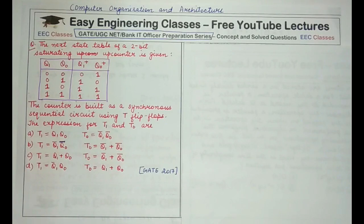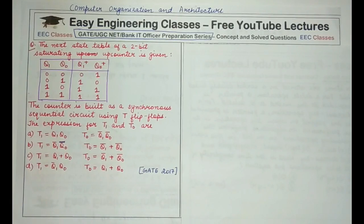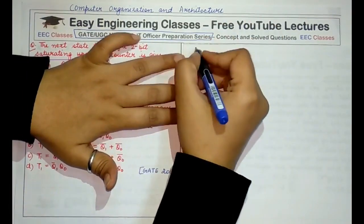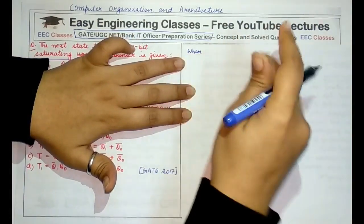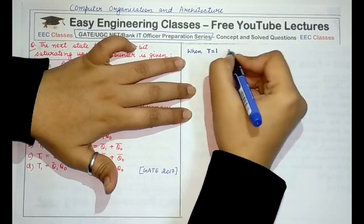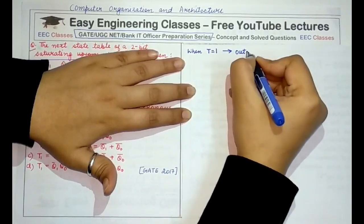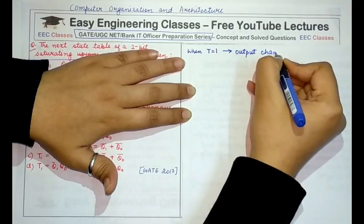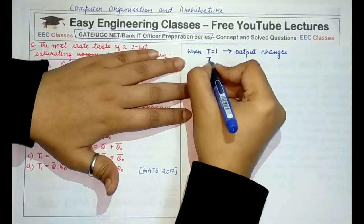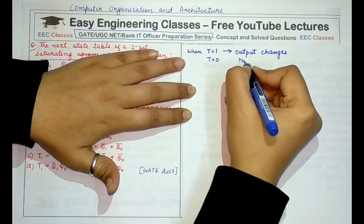Even if you are only aware of the functioning of a T flip-flop, you will be able to solve this question. One thing to remember is that the output of a T flip-flop changes when T is equal to 1 and it remains the same when T is equal to 0. When T equals 1, if the output is 1 it goes to 0, and if it is 0 it goes to 1. When T equals 0, no change occurs.